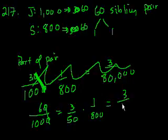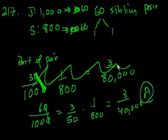And you multiply them, you get 3 over 40,000. And that's choice A. When you don't see your choice, make sure to read the question again. I'm almost out of space, so let me clear all of this.